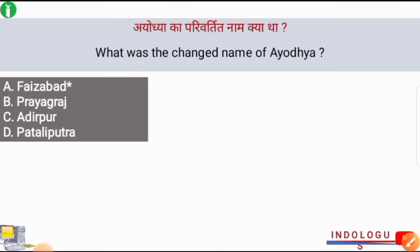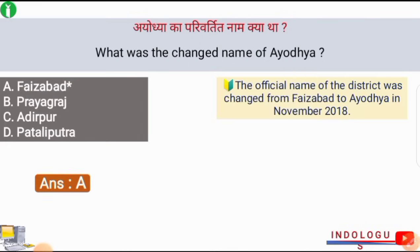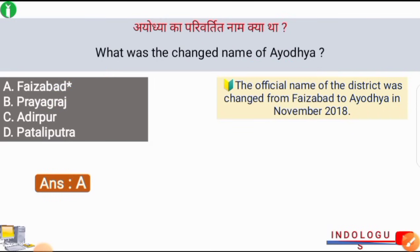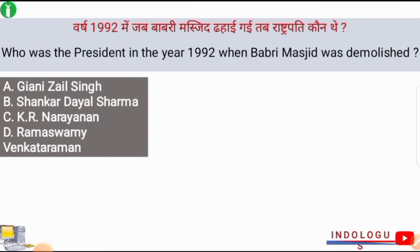What was the changed name of Ayodhya? The correct answer is option number A, i.e. Faizabad. Faizabad was the old name of Ayodhya. The official name of the district was changed from Faizabad to Ayodhya in November 2018.